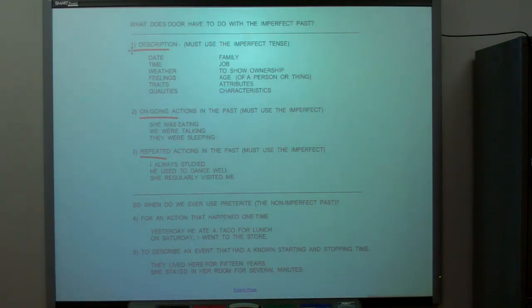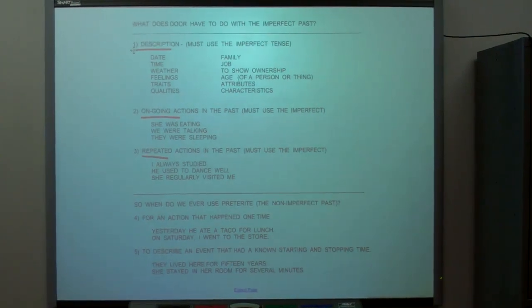Once. On Saturday, I went to the store. One time. Or, you also use the preterite to describe an action that had a known starting and stopping time. Like, they lived here for 15 years. She stayed in her room for several minutes. But again, if you're not sure, guess imperfect. Your default is imperfect.